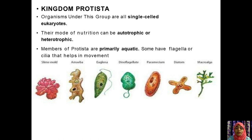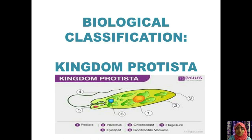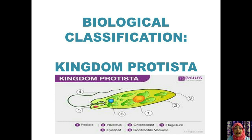In the diagram of Protista, you can see labeling which includes pellicle — the outer layer of the protist — as well as nucleus, chloroplast, flagellum, contractile vacuole, and an eyespot. The eyespot is represented as a characteristic feature of the protists.